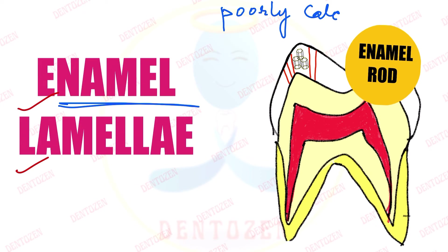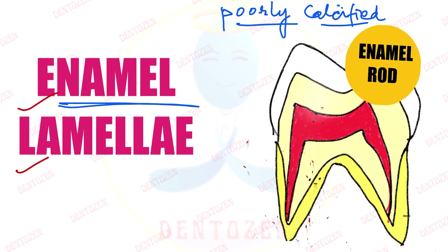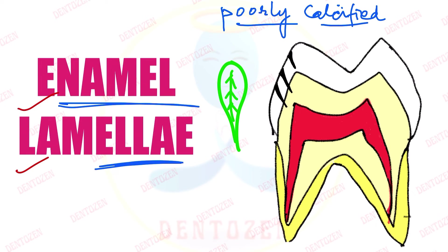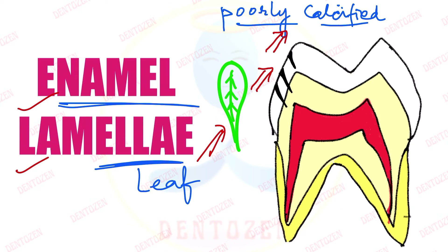How do poorly calcified rods appear under the microscope? They will look like black areas, and these black areas resemble a leaf. Because they resemble a leaf, they are called lamellae — the term lamellae means leaf. So these leaf-like structures in enamel, formed due to poorly calcified rod segments, are known as enamel lamellae.